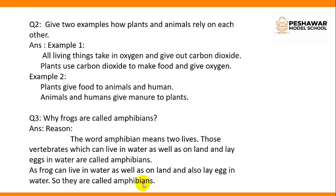Question number 3: Why are frogs called amphibians? The word amphibians means two lives. Those vertebrates which can live in water as well as on land and lay eggs in water are called amphibians. Frogs can live in water as well as on land and also lay eggs in water, so they are called amphibians.